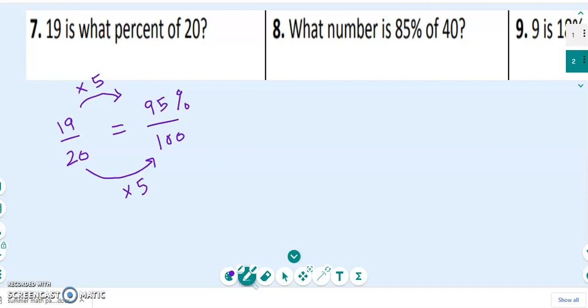That means that 19 is 95 percent of 20. Just a quick percent problem for you. Thanks, guys. See you guys. Bye-bye.